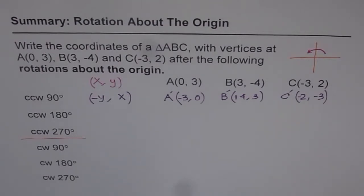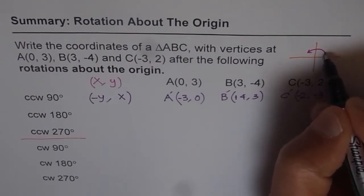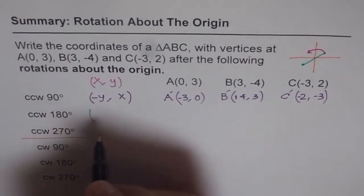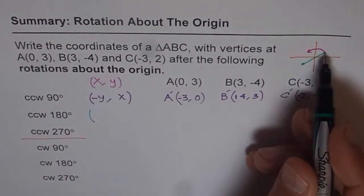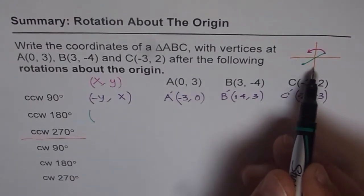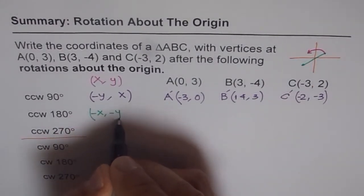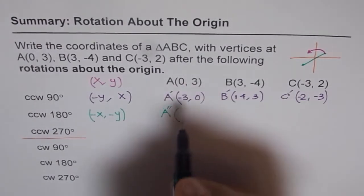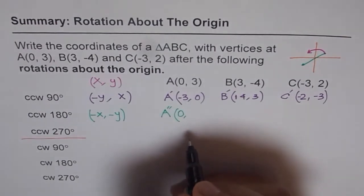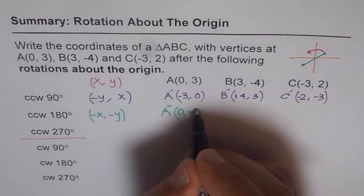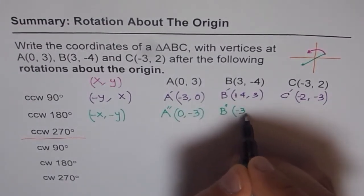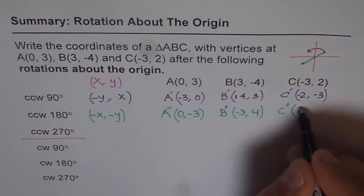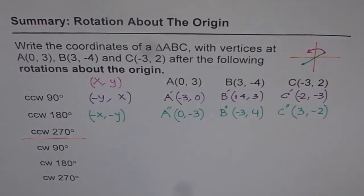Now let us consider 180 degrees counter-clockwise. When you do 180 degrees, a point comes right across. X and Y remain the same positions, but both their signs change: X becomes negative and Y also becomes negative, giving us (-x, -y). So for A double-dash: (0,3) → (0,-3). For B double-dash: (3,-4) → (-3,4). For C double-dash: (-3,2) → (3,-2).